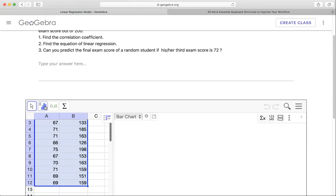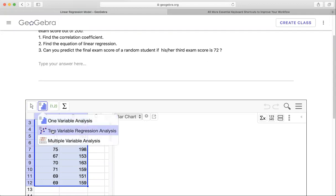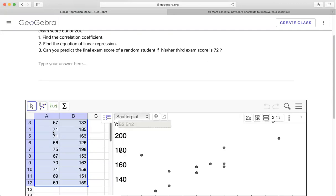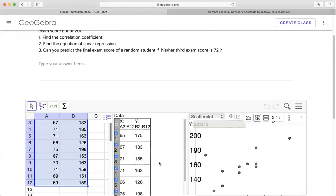And then you click on this symbol right here. It will have the drop down menu. You're going to do two variable regression analysis. And then you see the scatter plot on this part right here. If you click on this symbol right here, it will show the data on the side.